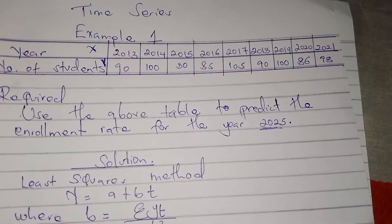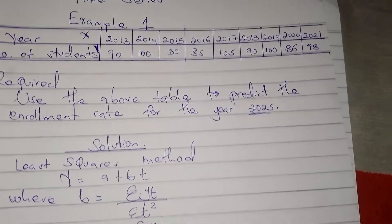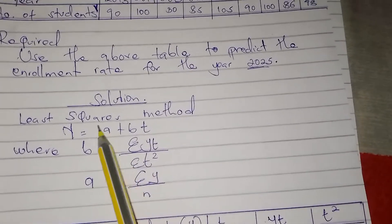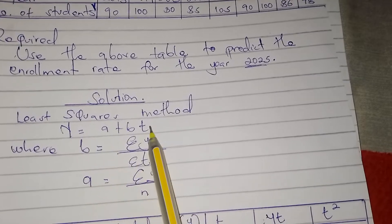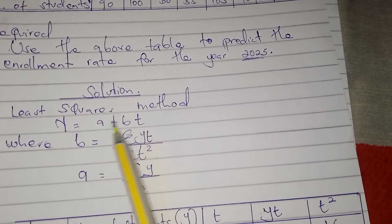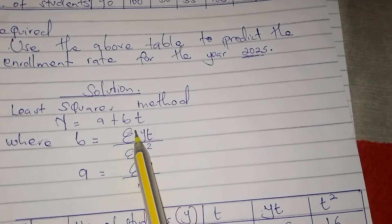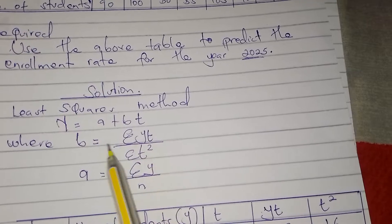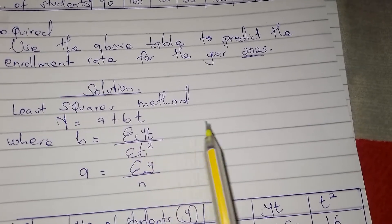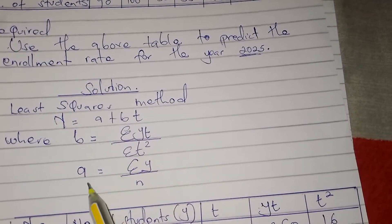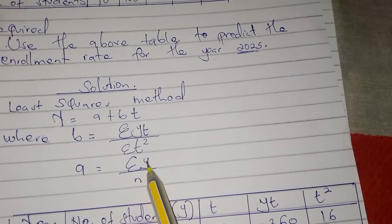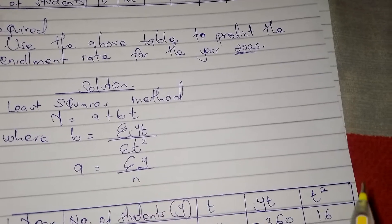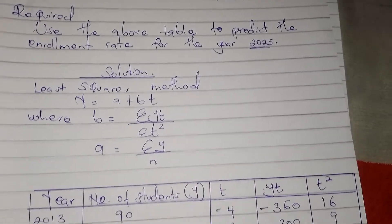When we are calculating for time series, we use the least squares method. The method is y equals a plus bt, whereby b is equal to summation yt over summation t squared, and a is summation y over n. We shall now draw our table.